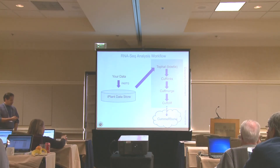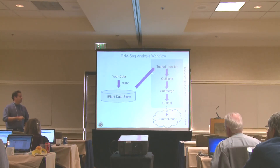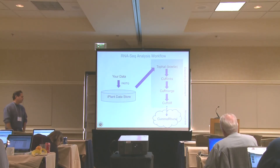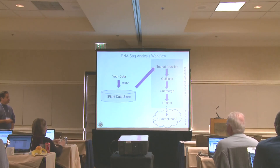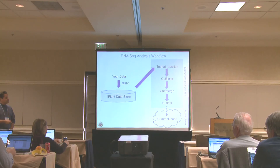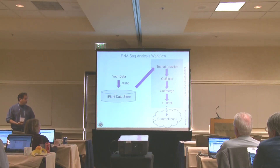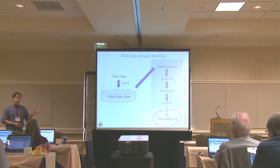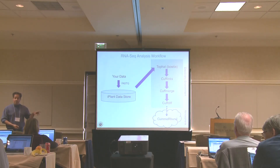Most of the work we're doing today is in the discovery environment. We've already launched our TopHat and Bowtie alignment — it takes about half an hour to 45 minutes depending on queuing time. Then we use Cufflinks to assemble our transcripts, Cuffmerge to make our reference transcriptome, and Cuffdiff for the comparative analysis. A typical application integrated into the discovery environment is a Linux command line application that runs on our job execution cluster at the University of Arizona, or on XSEDE supercomputers via the foundational API.